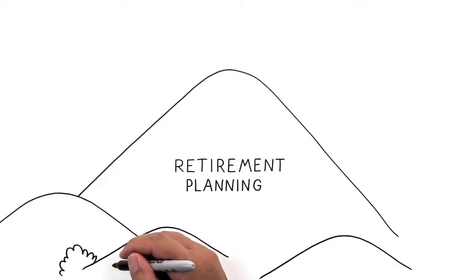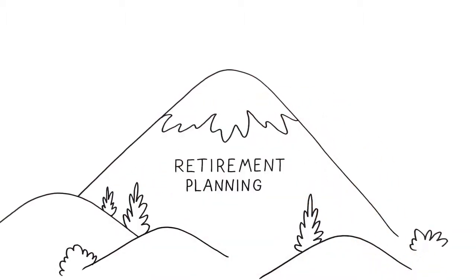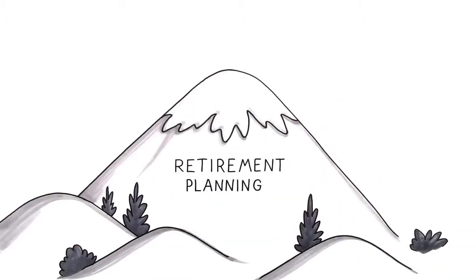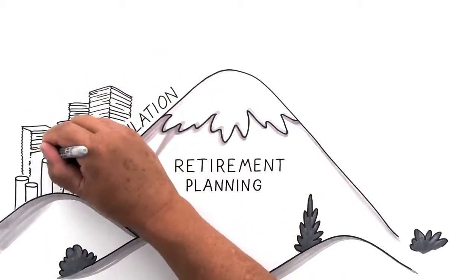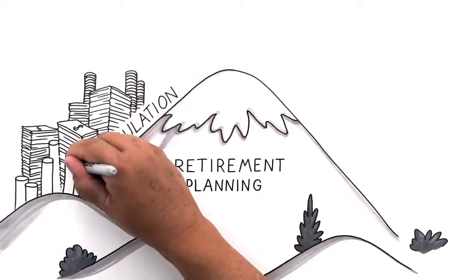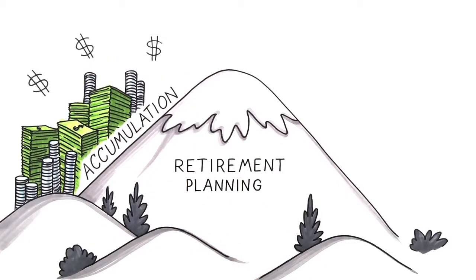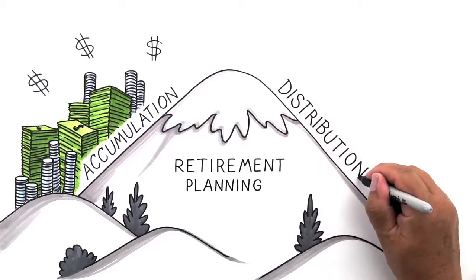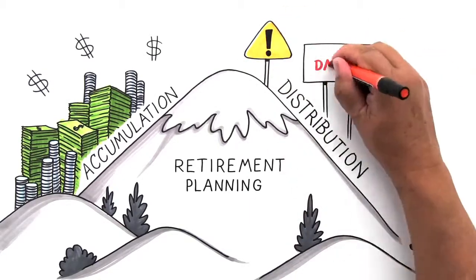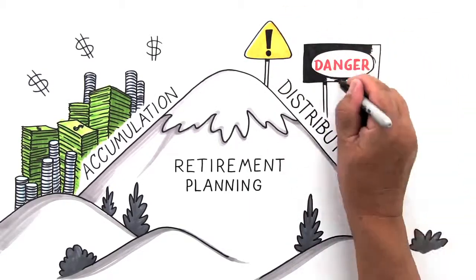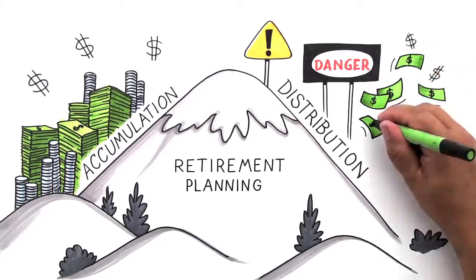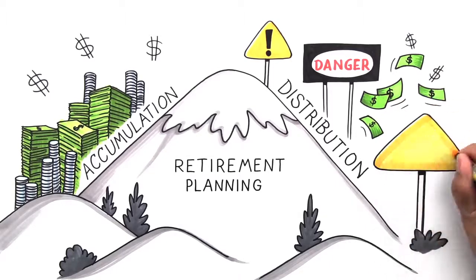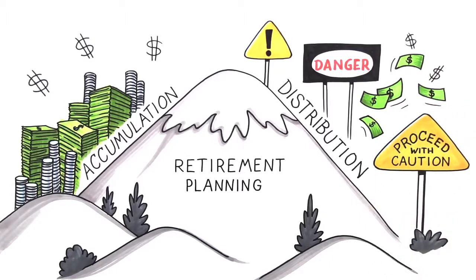We believe the same is true for retirement planning. Most people are focused only on saving money for retirement, climbing to the top, or what we call the accumulation phase. But we must also focus on how to make our money last throughout retirement. In other words, climbing back down safely, what we call the income distribution phase. And just as climbers are faced with tremendous risks during their descent, resulting in 80% of climbing accidents, retirees are also faced with unique and potentially devastating risks during their journey back down the retirement mountain.